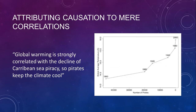Attributing causation to mere correlation: the rise in global temperature is strongly correlated with the decline in Caribbean sea piracy. A graph shows a clear linear correlation between declining pirates and increasing temperature. Therefore, pirates keep the climate cool. Obviously correlations do not equal causation, even if the correlation is strong and clear — it's simply not always true that two correlated things are causally related.